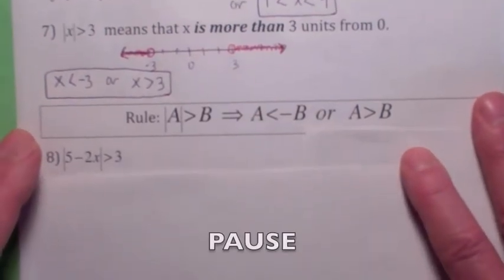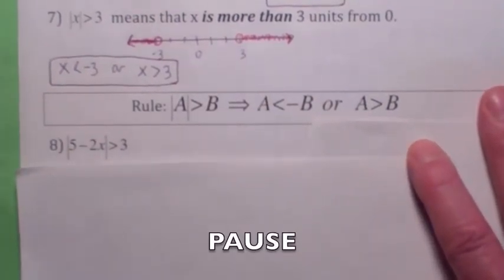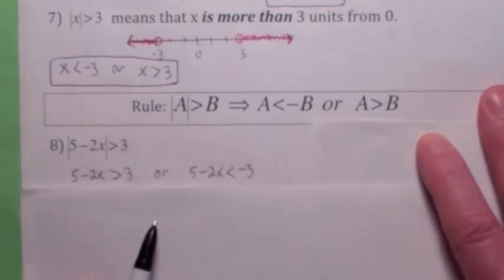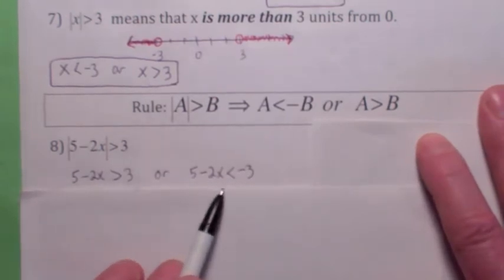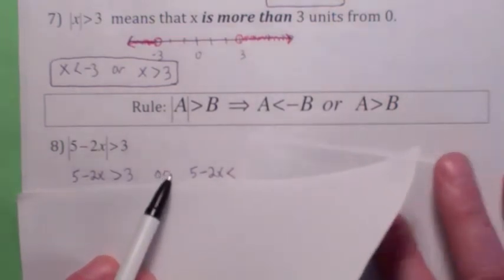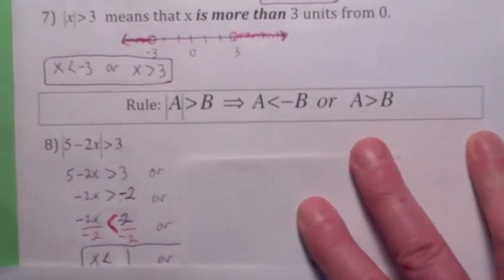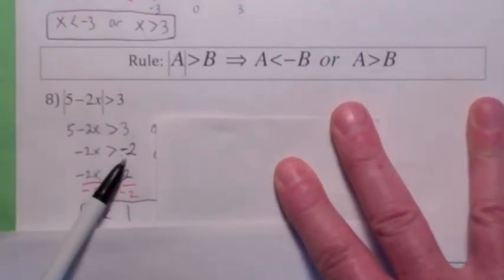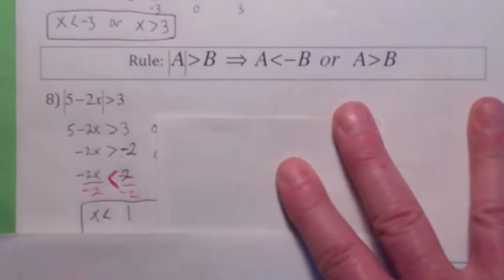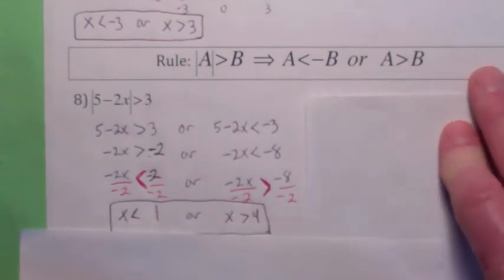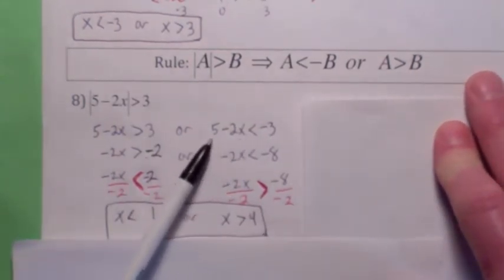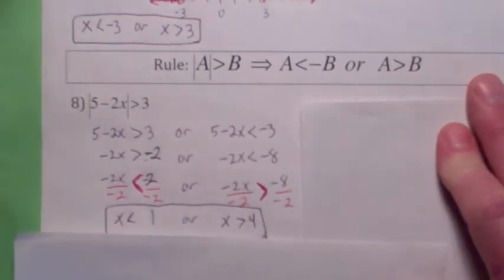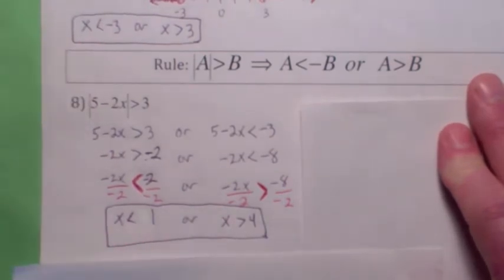See if you can do this one. Since there's a greater than sign here, that means what's inside the absolute value bars is either greater than 3 or less than negative 3. So you've got to solve each of these separately. Let's do this one first — if you're greater than 3, that means if you subtract 5 you get this, and if you divide by negative 2 you get 1, so x is less than 1. The other case is you could also be less than negative 3. If you subtract 5 you get this, and if you divide by negative 2 you get this — that means x is greater than 4. So the solution would be x is less than 1 or x is greater than 4.